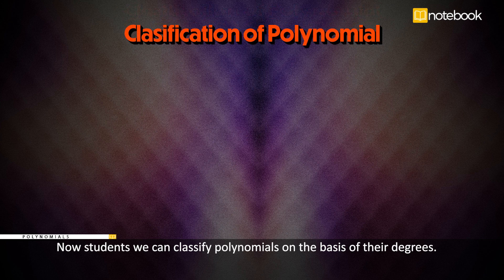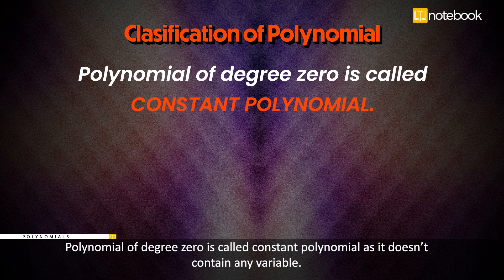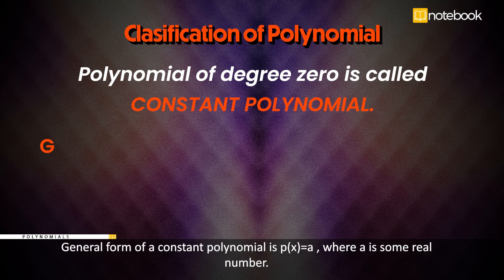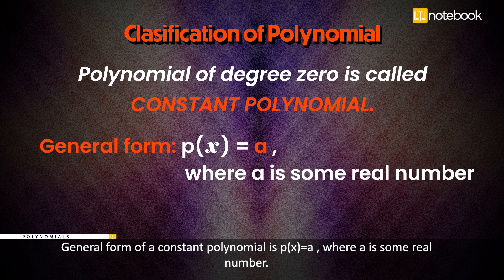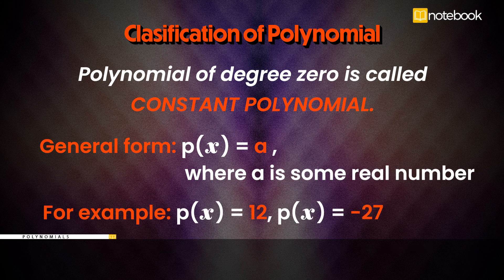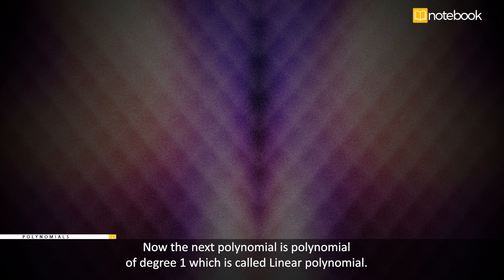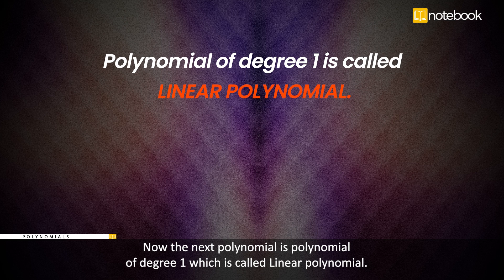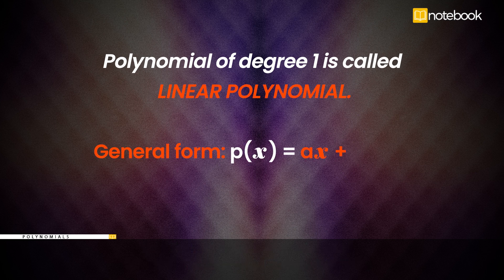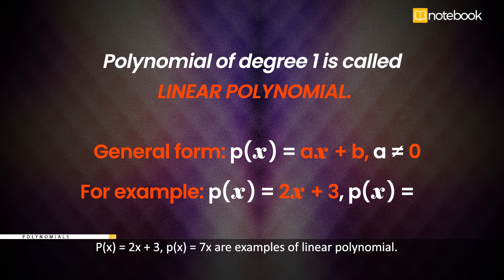We can classify polynomials on the basis of their degrees. A polynomial of degree 0 is called a constant polynomial as it doesn't contain any variable. Its general form is p(x) = a, where a is some real number. For example, p(x) = 12 or p(x) = −27 are constant polynomials. A polynomial of degree 1 is called a linear polynomial. Its general form is p(x) = ax + b, where a and b are real numbers and a ≠ 0. For example, p(x) = 2x + 3 and p(x) = 7x are linear polynomials.